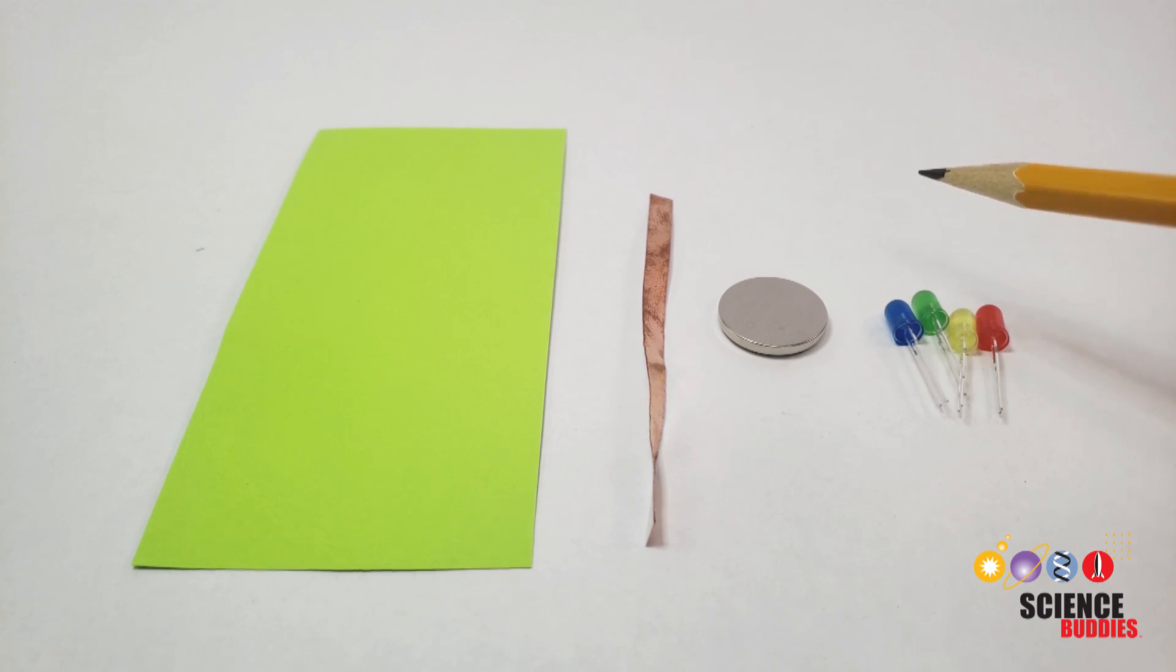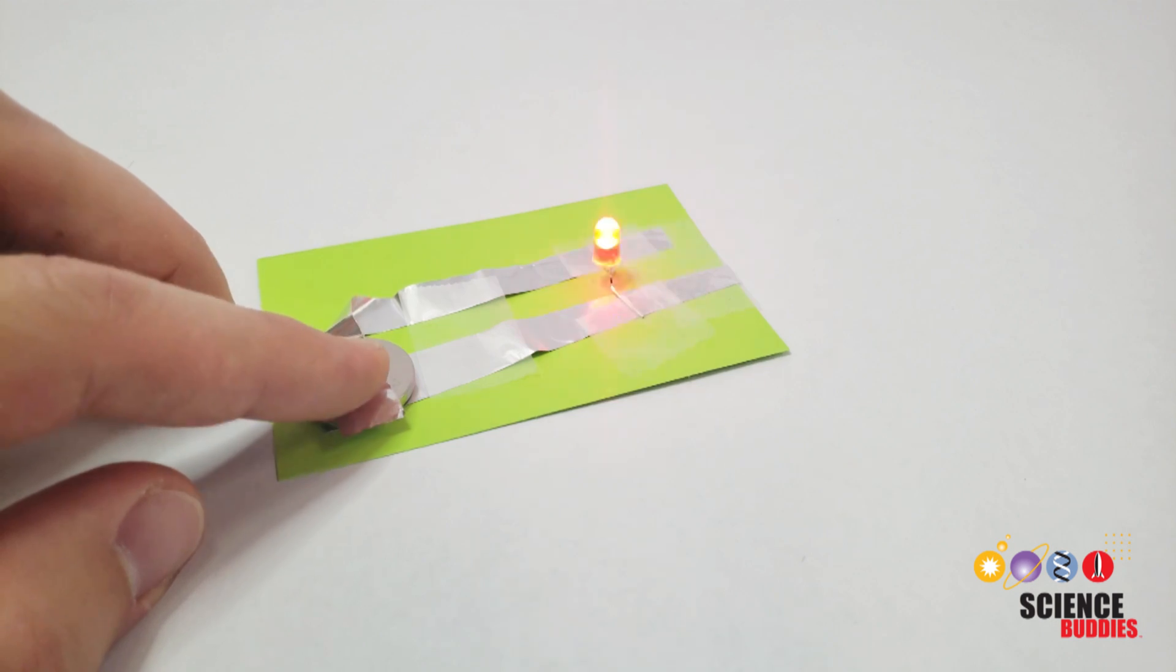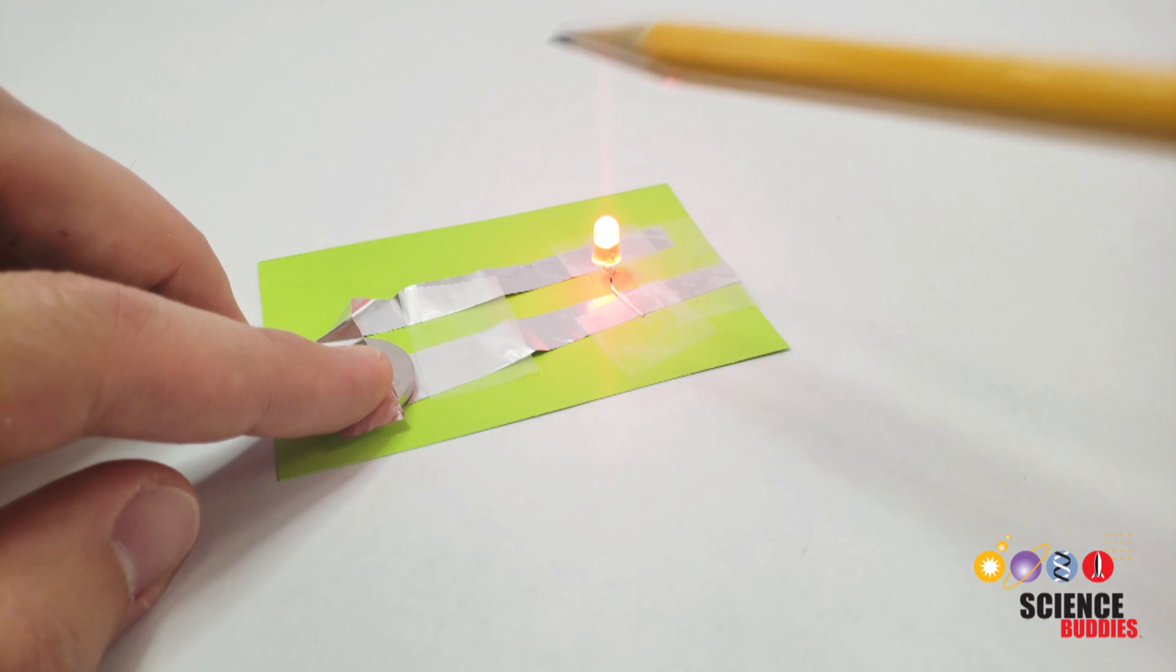Check out the link in the description below this video to find out where you can buy these parts. Note that you can also substitute aluminum foil for the copper tape, but since it doesn't have a sticky backing, you'll need more tape to hold it down.